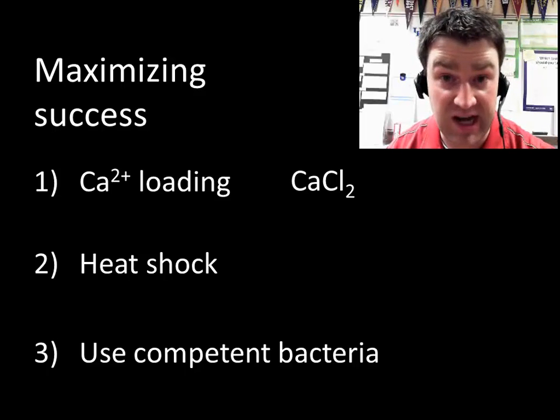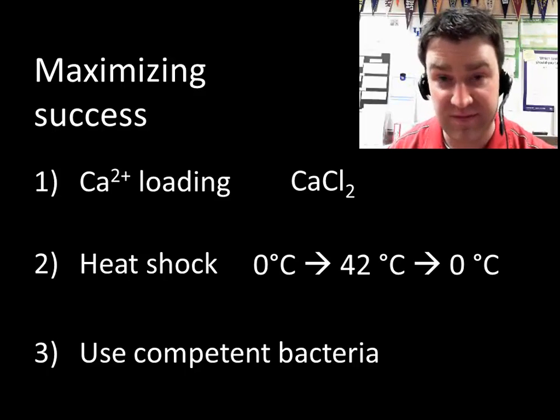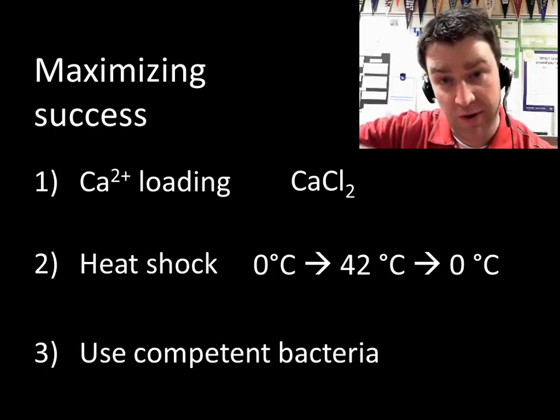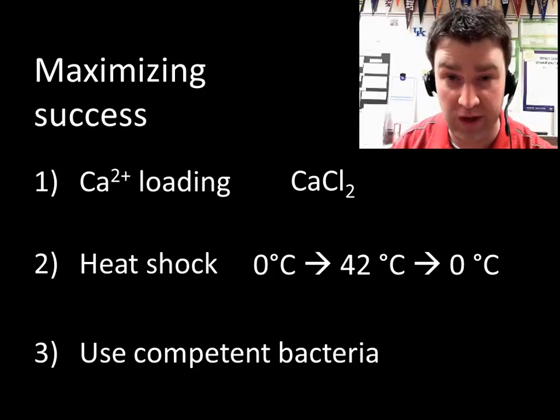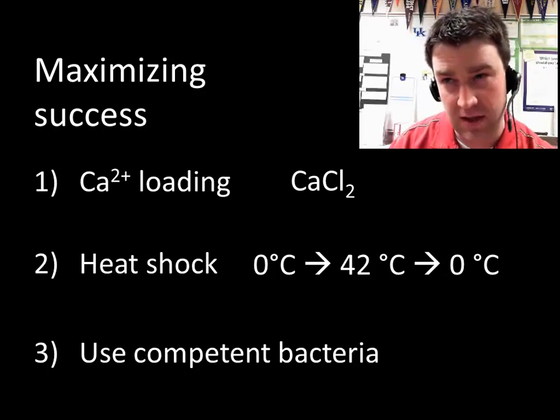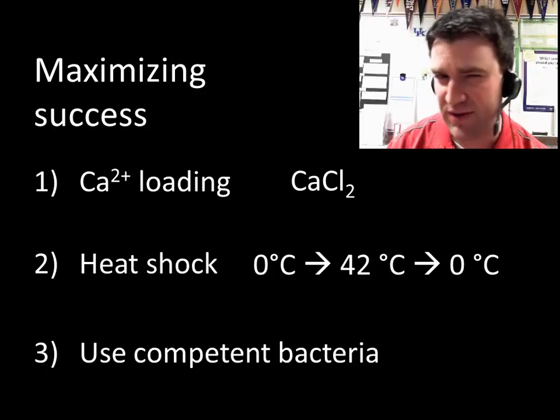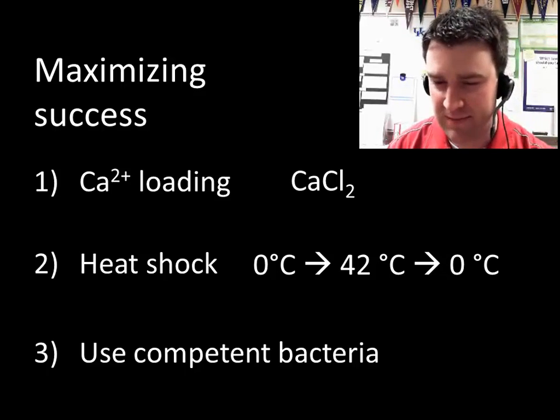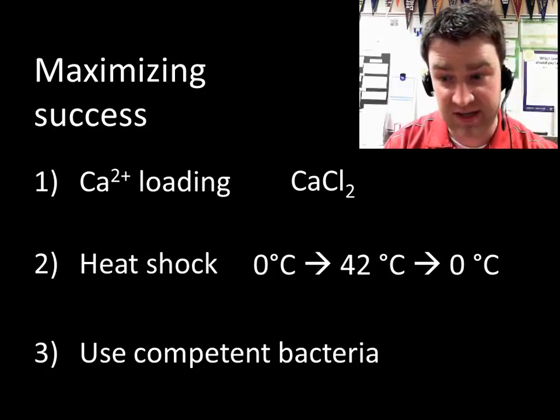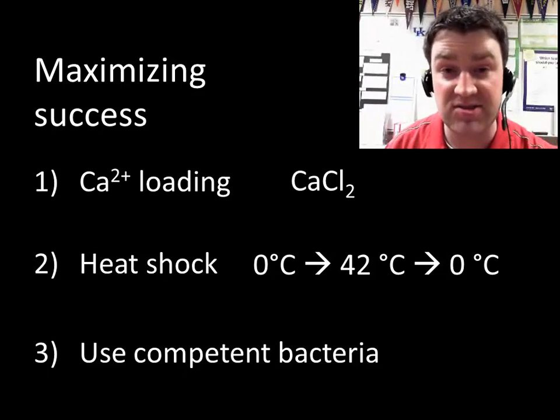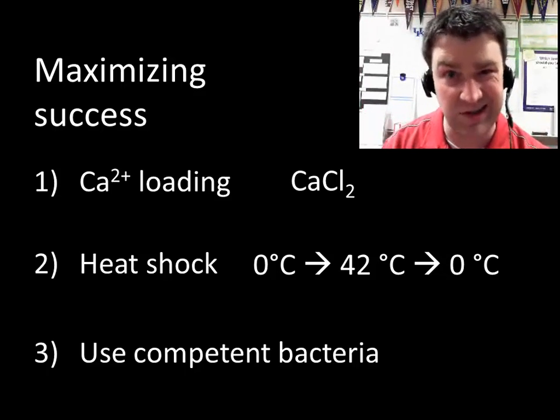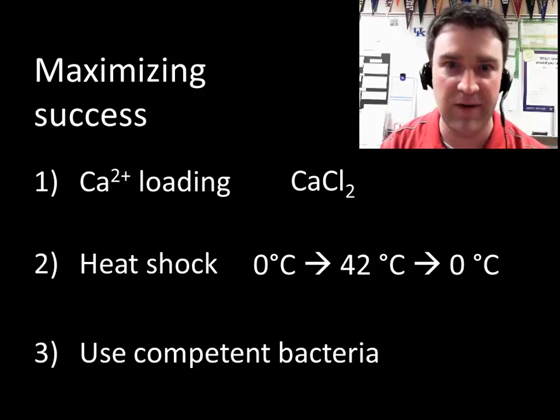We're also going to heat shock the bacteria so we're going to make them very cold at first. We're going to put them in a warm but not hot environment, 42 degrees is pretty far away from boiling. Perhaps the heat kind of weakens their membrane is one theory of what this does to help make the DNA come in more easily. And then we really need to very quickly put them back on ice so that perhaps the membranes kind of solidifies again and doesn't let the DNA right back out.